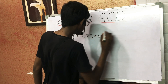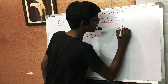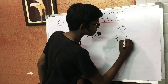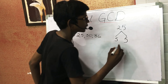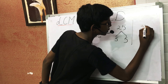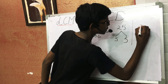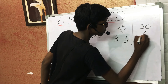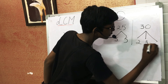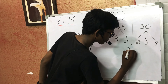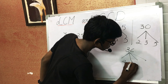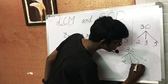Let us find the prime factors of these three numbers. The prime factors of 25 are 5 and 5, so 5 × 5 = 25. The prime factors of 30 are 2, 3, and 5. And the prime factors of 36 are 2, 3, 2, and 3.